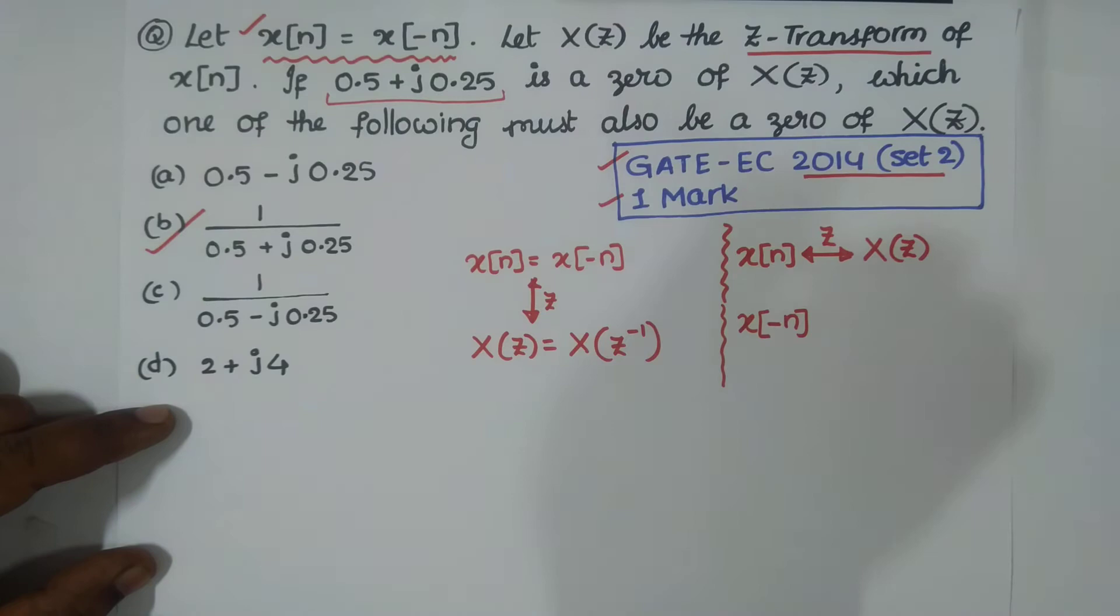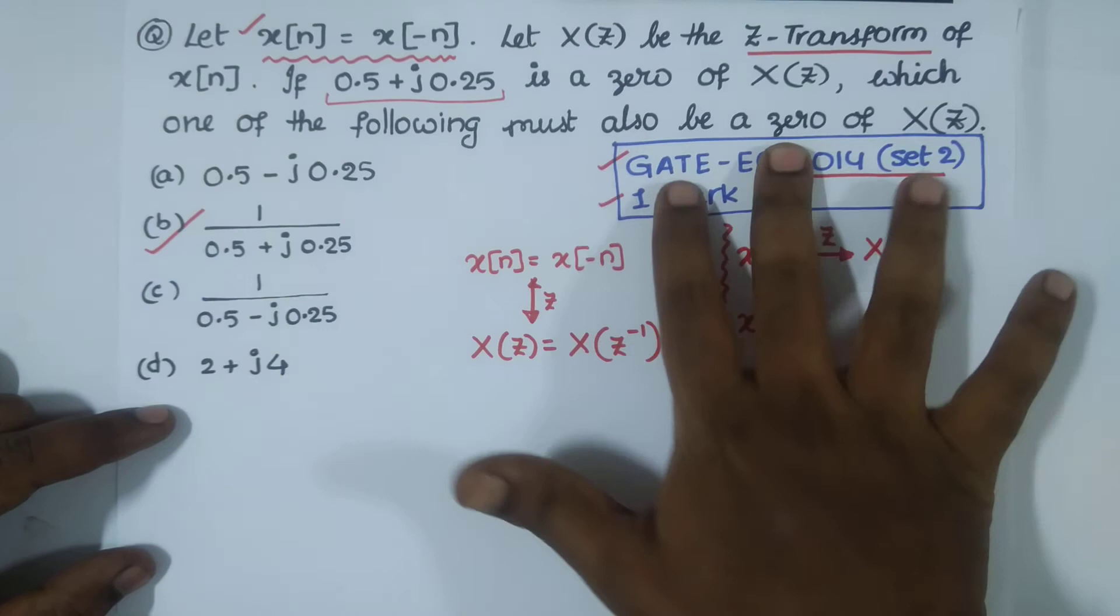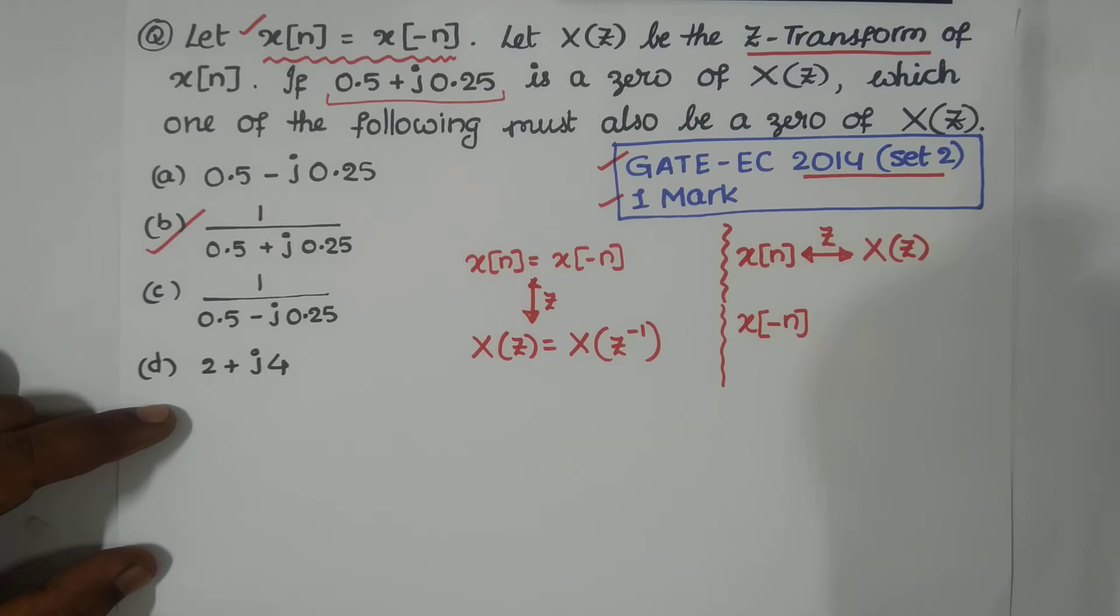If you have some sequence, folding means with respect to n equal to 0, you have to fold like this. I'm hoping that you know these things well.